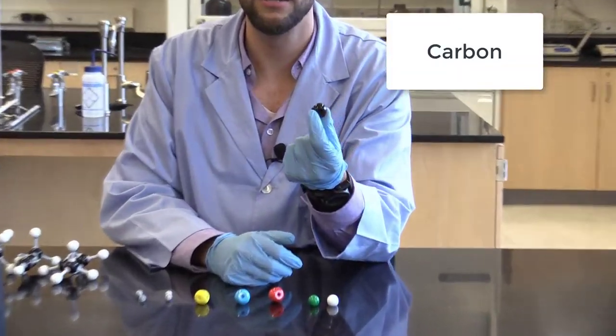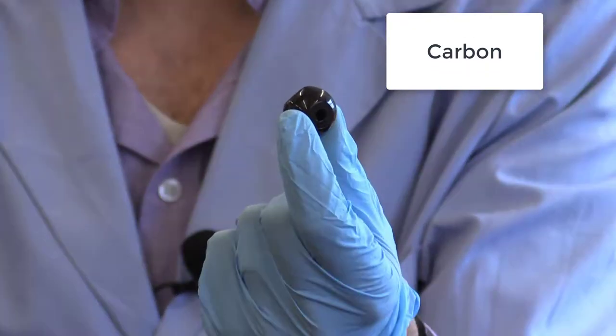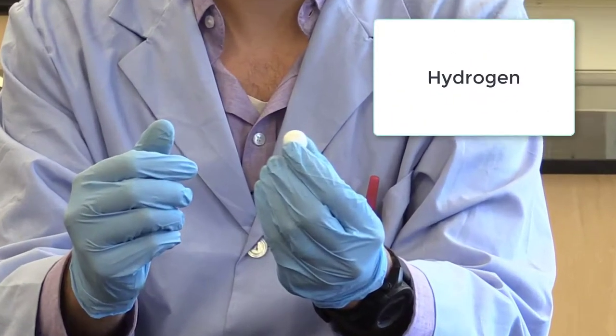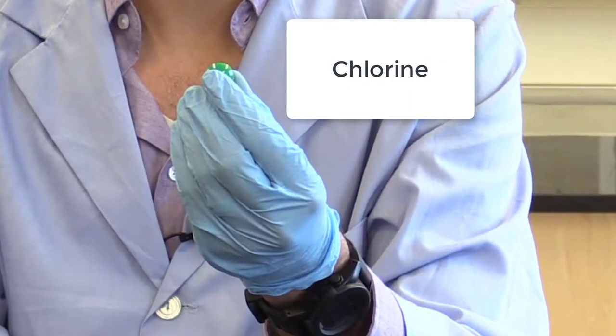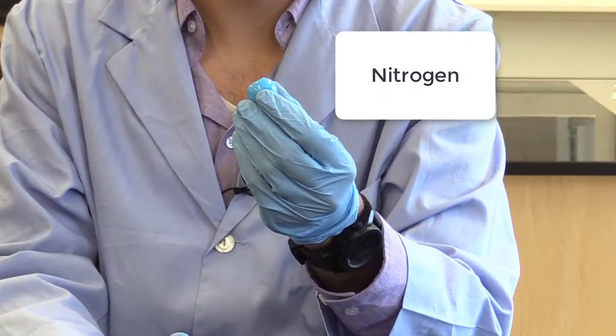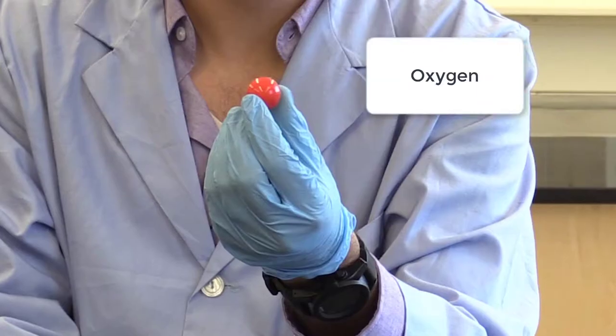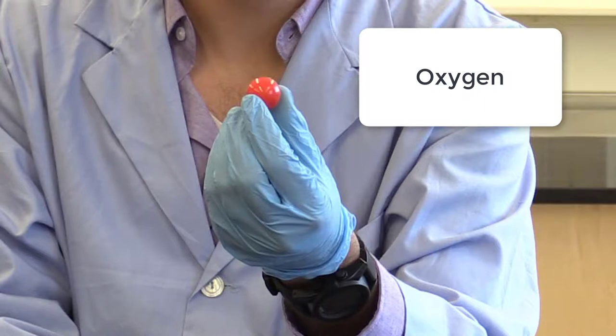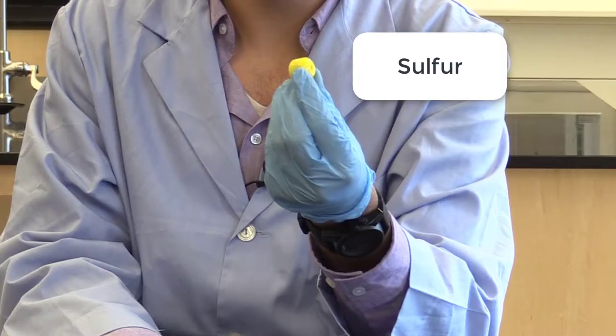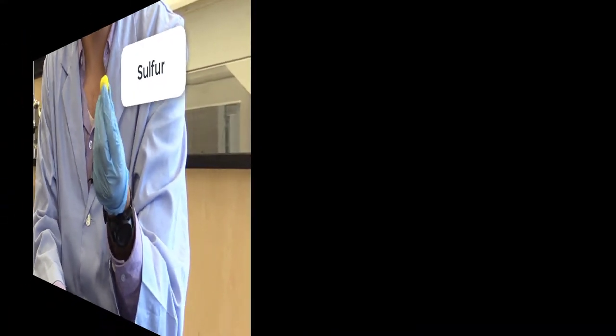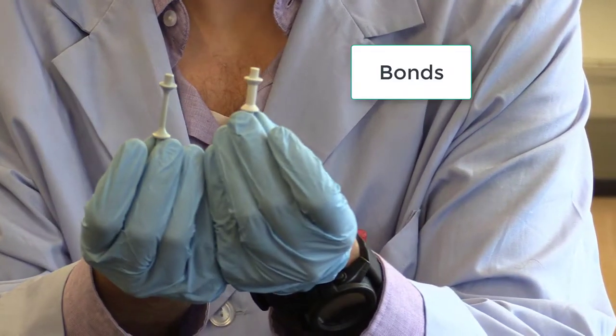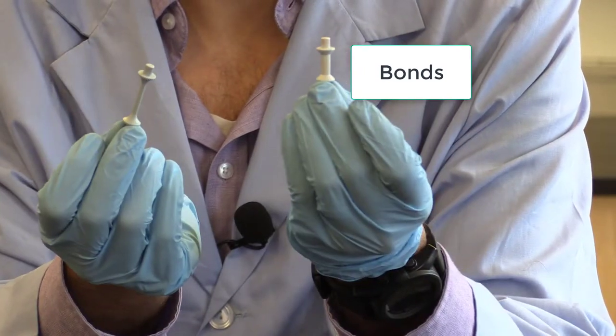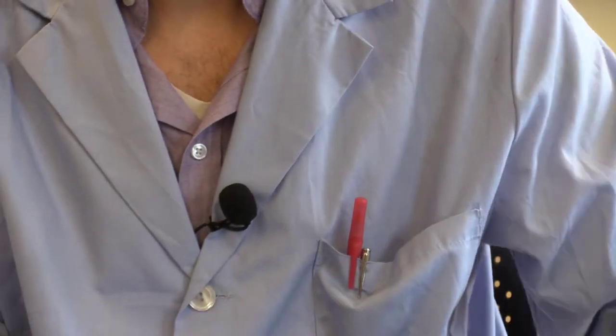So the black guy here, this one is carbon. This is hydrogen. This is chlorine. This is nitrogen. This is oxygen. This is sulfur. And the two connectors that you see here, these are the guys that will make our bonds.